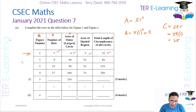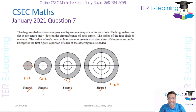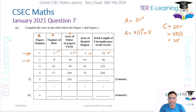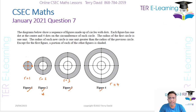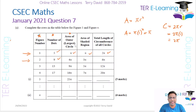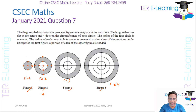Now moving to figure two: let's verify the numbers in the table. The number of dots — if we count: one, two, three, four, five, six, seven, eight, nine — so nine makes sense. Then for the area of the outer or larger circle, the area is πr² and the radius is two.